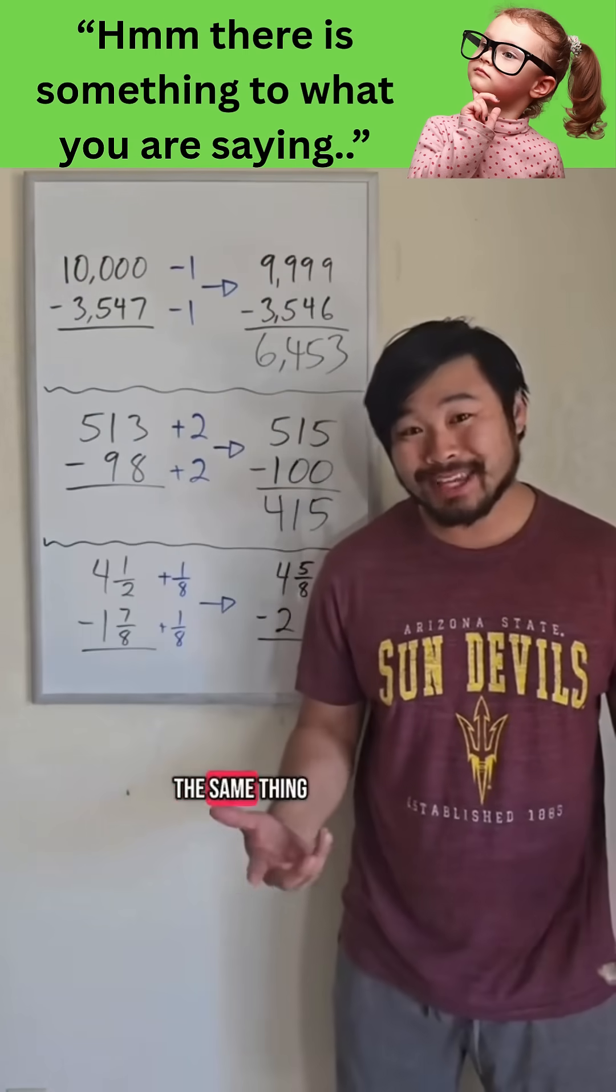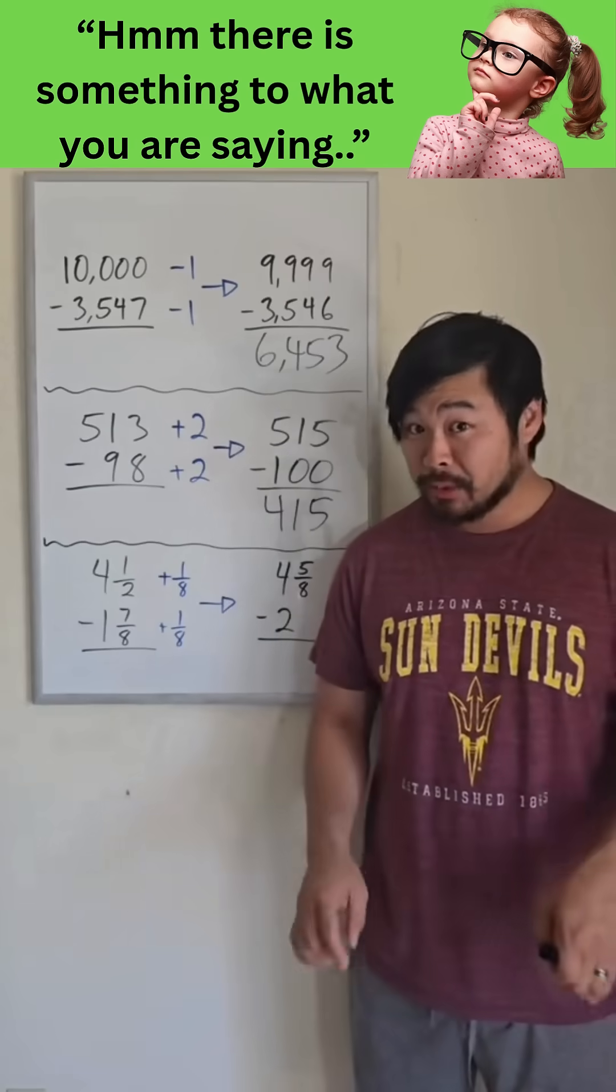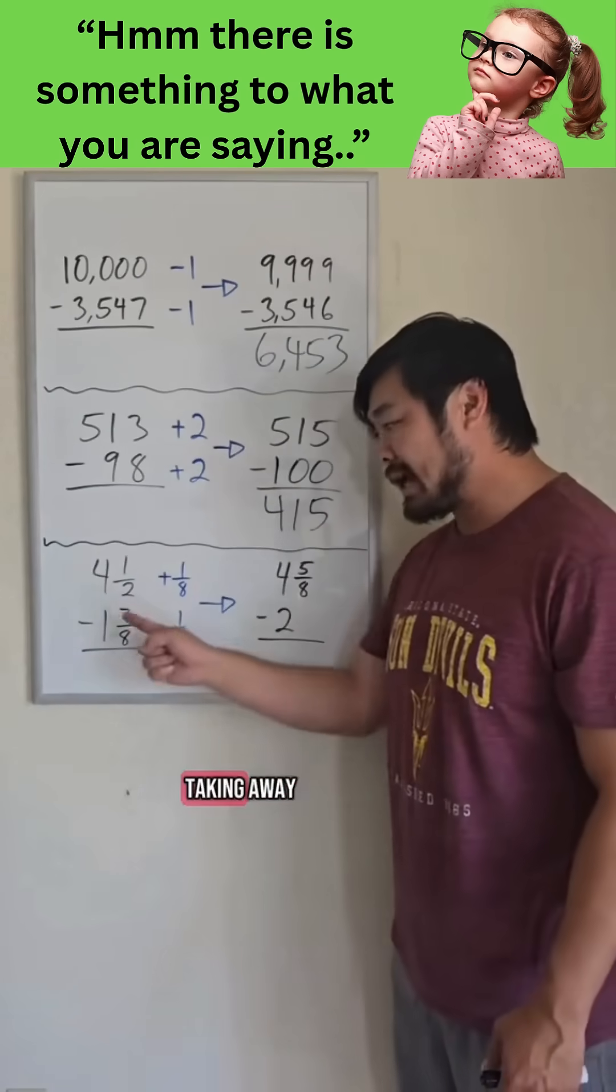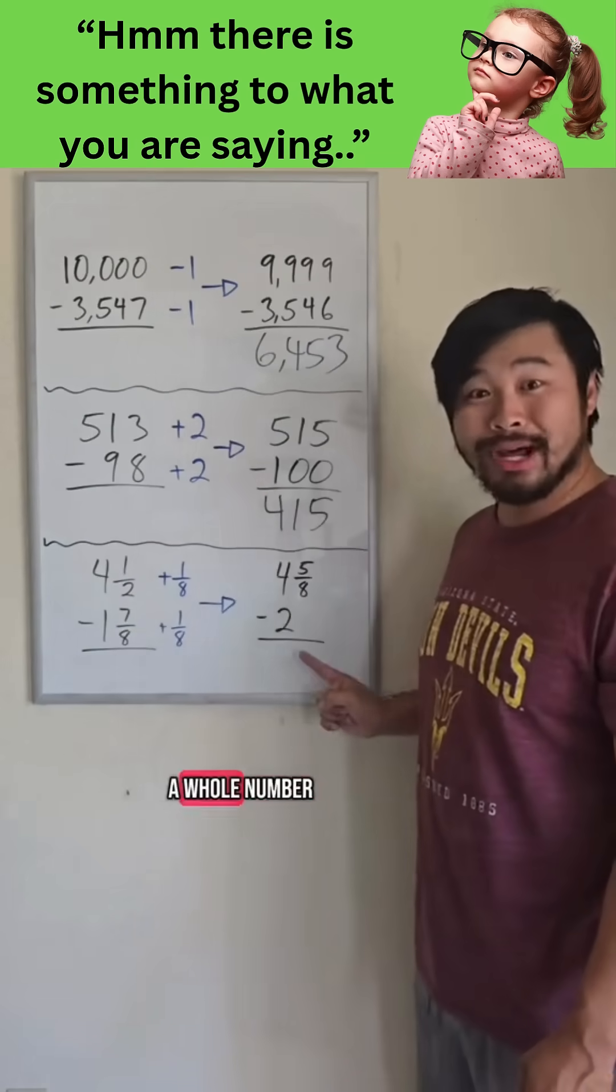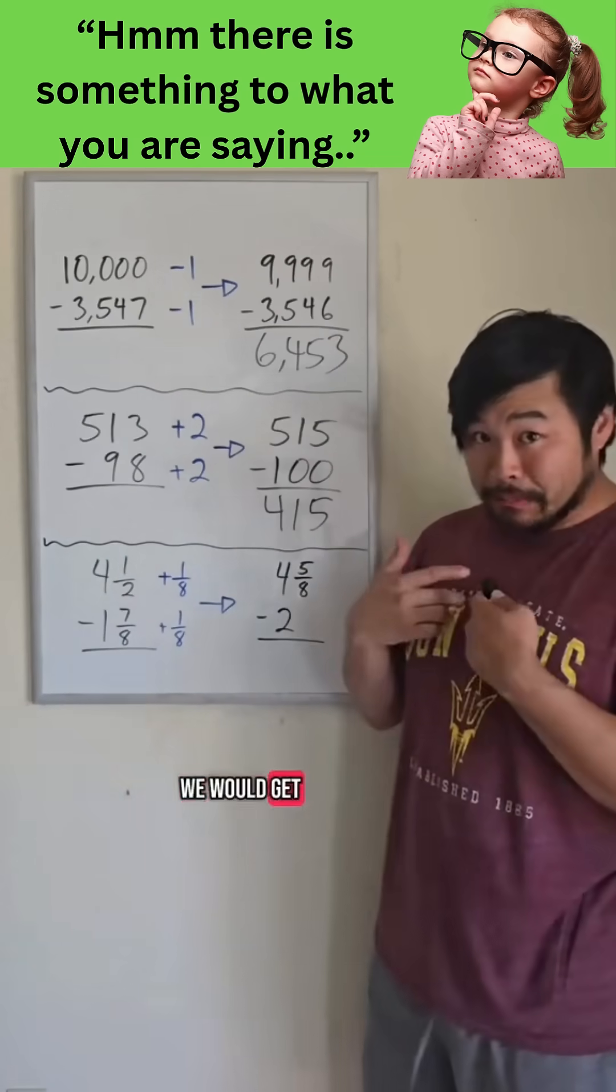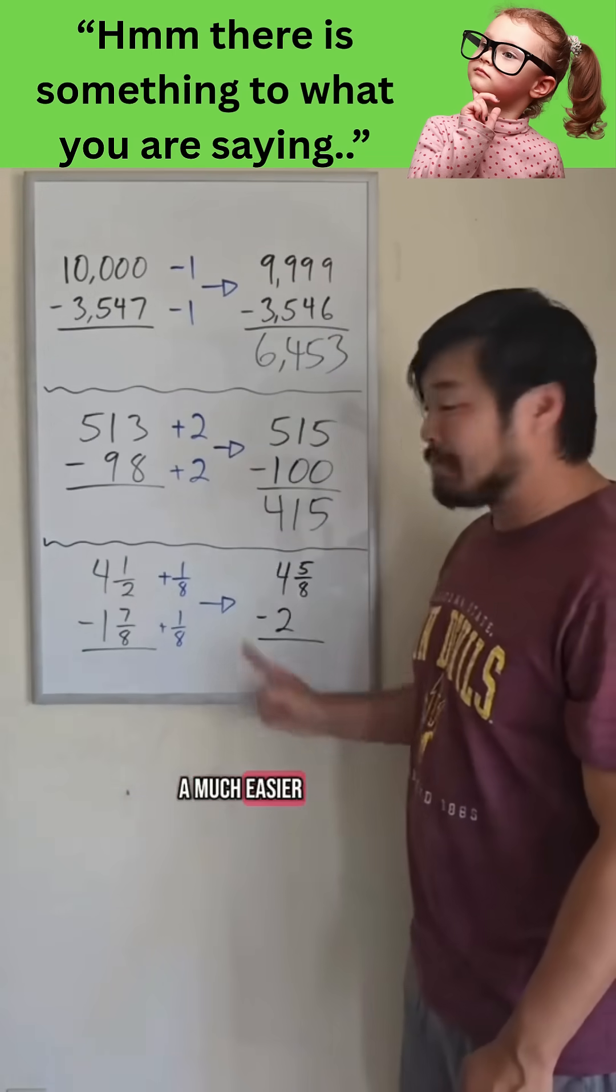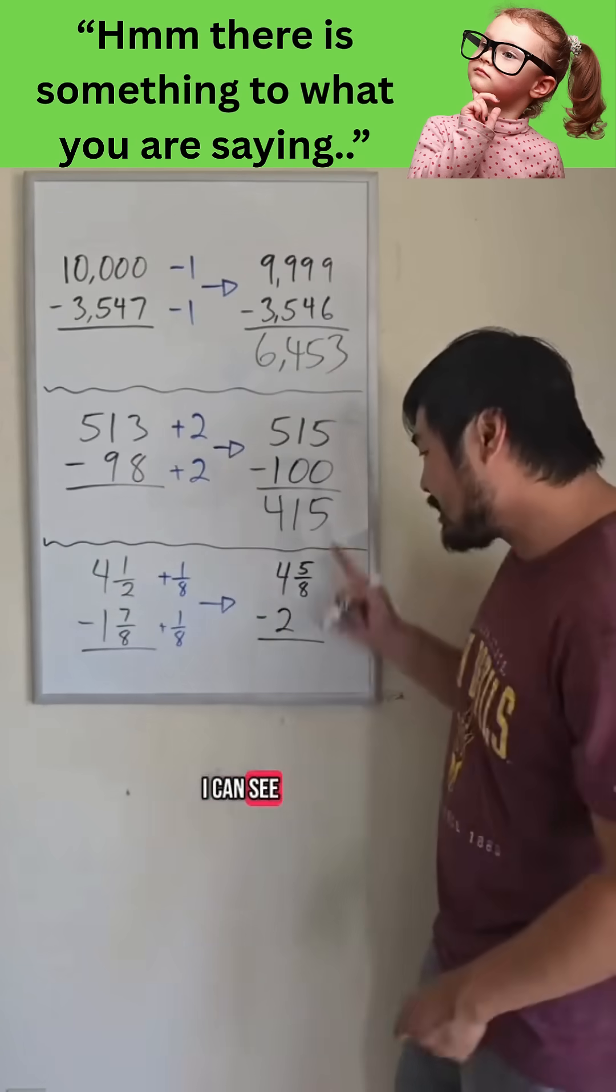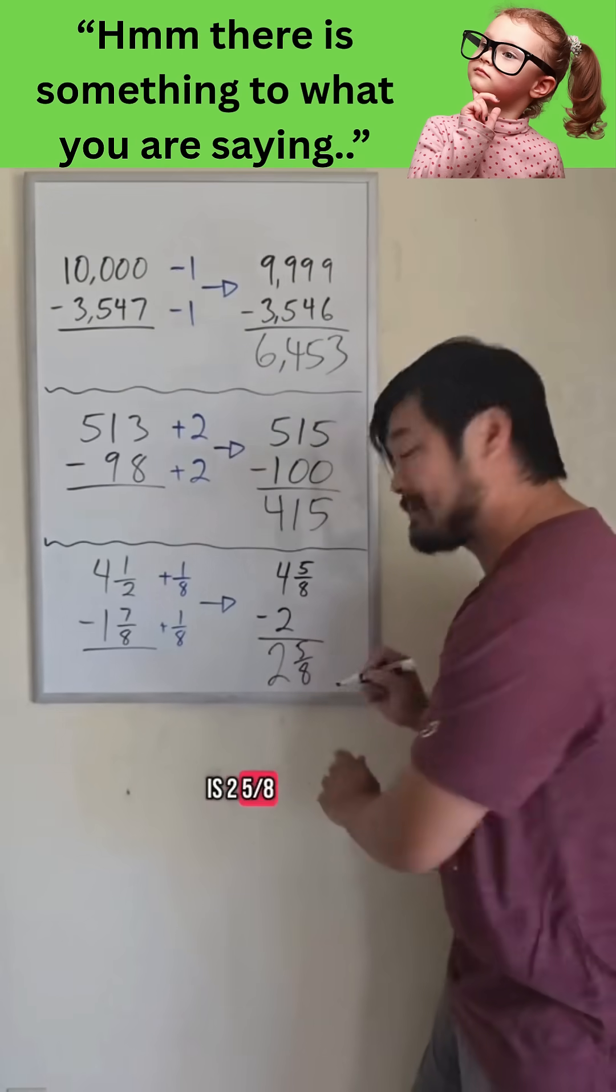And guess what? We could do the same thing when subtracting mixed numbers. It would be a lot easier if what we're taking away, the subtrahent, is a whole number. So if we add 1 eighth to both of these numbers, we would get, in my opinion, a much easier problem than the original. I can see that the answer is 2 and 5 eighths.